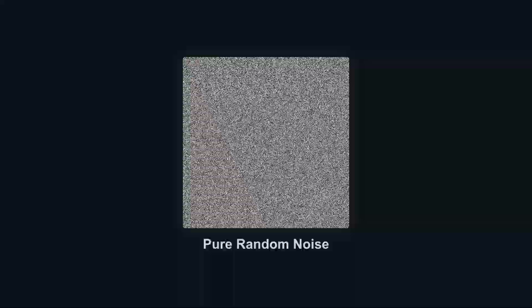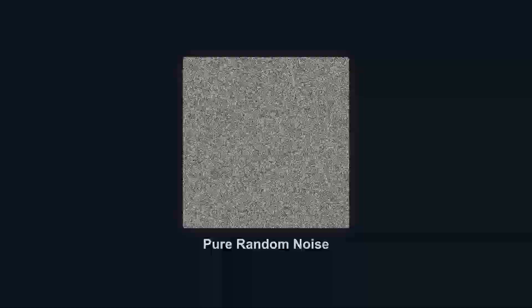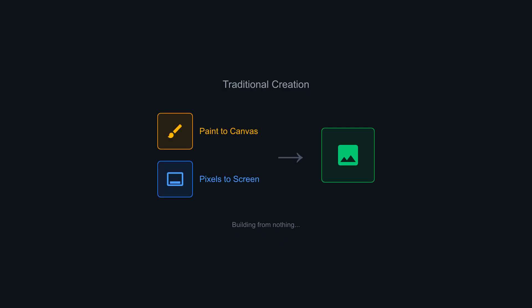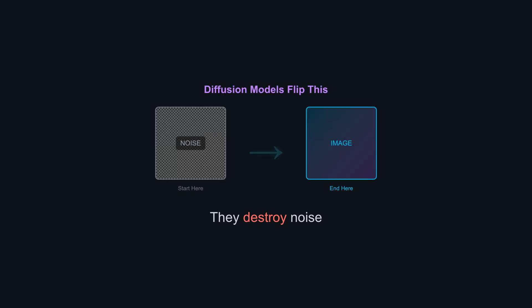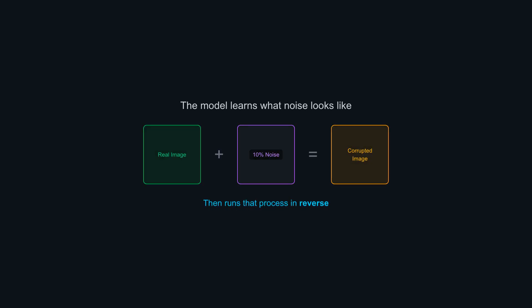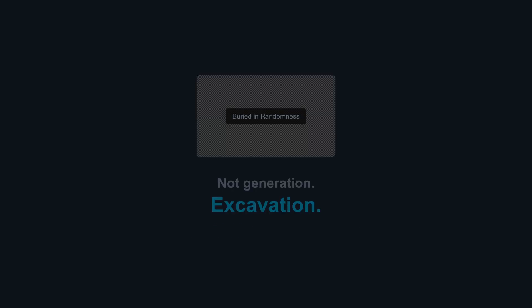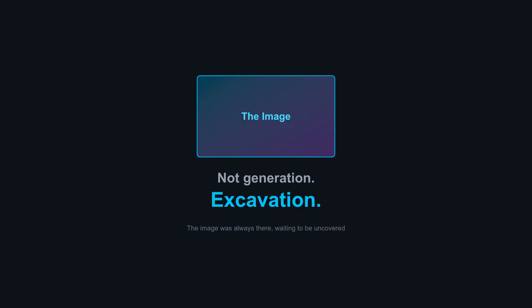Every AI-generated image you've ever seen started as pure noise. Static. Chaos. Nothing recognizable. That seems backwards. We think of creation as building something from nothing — adding paint to canvas, pixels to screen. But diffusion models flip this entirely. They don't create images. They destroy noise. The model learns what noise looks like when added to real images, then runs that process in reverse. Start with static, subtract the noise step by step, and structure emerges. It's not generation. It's excavation.